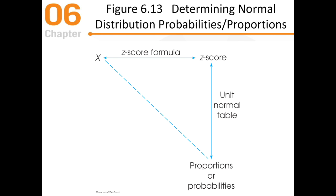There's a relationship between raw scores, z-scores, and proportions. If you have a raw score, you can convert it using the z-score formula to get a z-score. Once you have the z-score, you can find the probability using the unit normal table. It also works the other way: if you have a proportion, you can find the z-score, and from the z-score you can find the raw score.